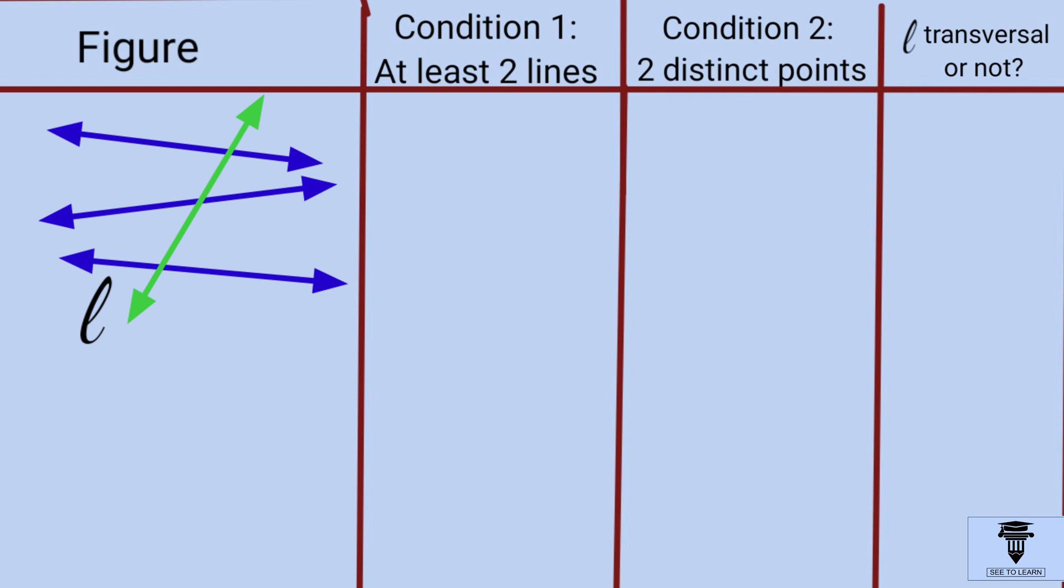In the fifth figure, line L is cutting three lines, so the first condition is fulfilled. Moreover, the points of intersection are distinct, so L is a transversal.